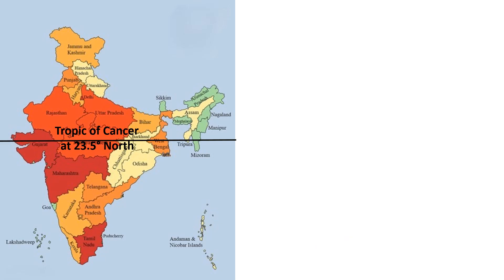The Tropic of Cancer, which is the latitude 23.5 degrees north, passes through the middle of India, dividing the country into almost two equal halves. One key point about the Tropic of Cancer is that it marks the northernmost point where the sun can be directly overhead at noon, which happens during the summer solstice around June 21. This is the longest day of the year for places located along this line.